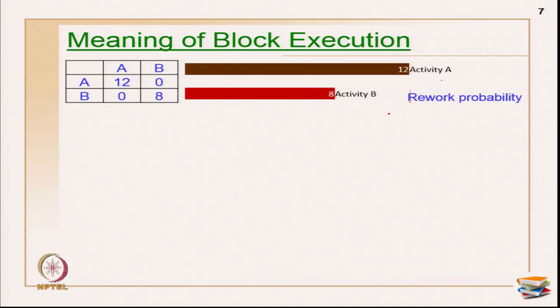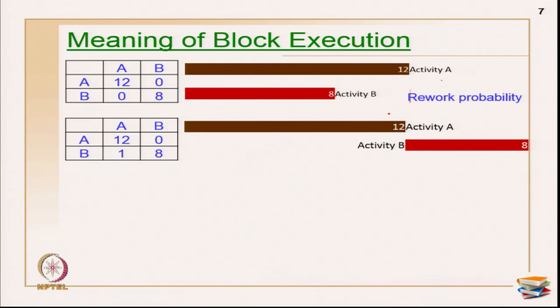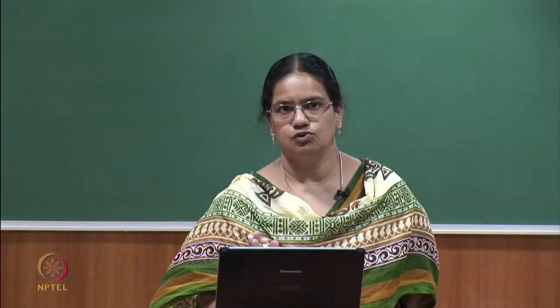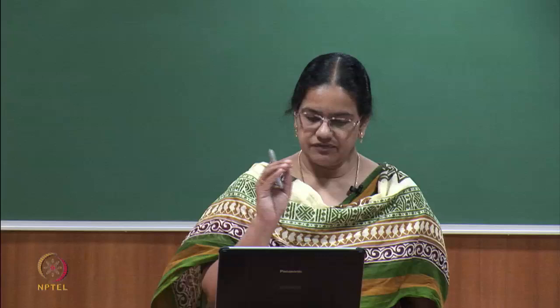Now I will explain rework probability with another case. I have taken the same example but used a value of 1 here - this X mark originally implies there is a relationship from A to B, and I am replacing this X value with a rework probability value of 1. As a result of any change in A, there is 100% probability that B will repeat. Every time you make some change in A, B will definitely repeat because I have a 100% probability value.